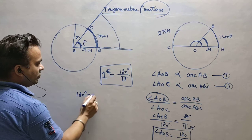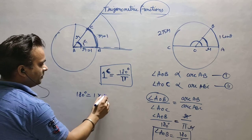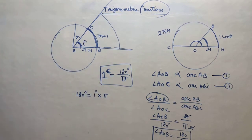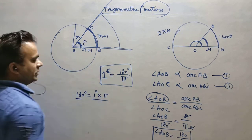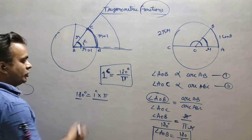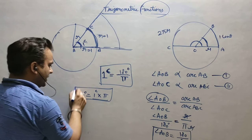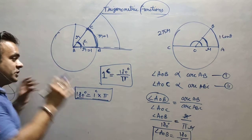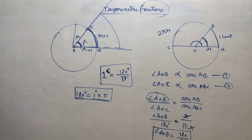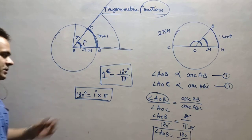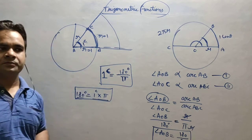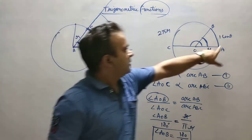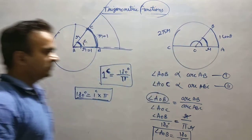So, 180 degrees is equal to what? 1 into pi. Correct? 180 degrees is equal to pi. In the next class, we will take care of the topic and you will understand pi in the brain — it will be very easy. 180 and pi are the same. Pi is what? Pi is the same.